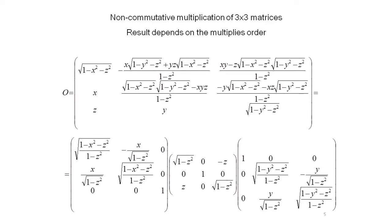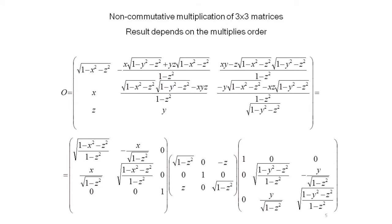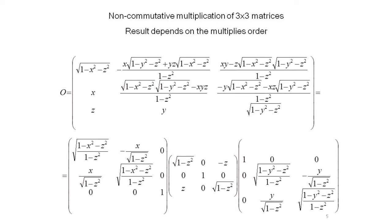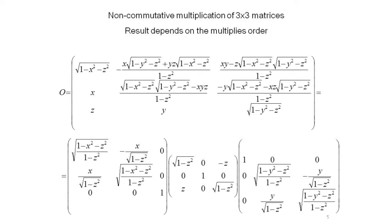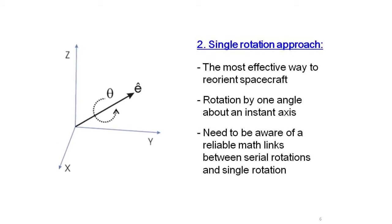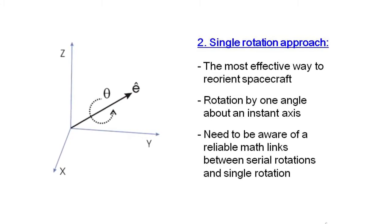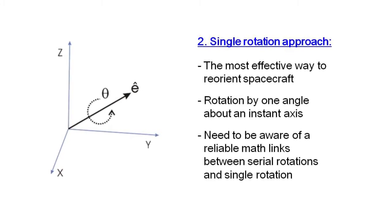Therefore, this approach, mathematically based on the three-dimensional vector group of orthogonal rotations, has disadvantage of ambiguity. We stress that the most effective way to reorient spacecraft is a single rotation by one angle about an instant axis.